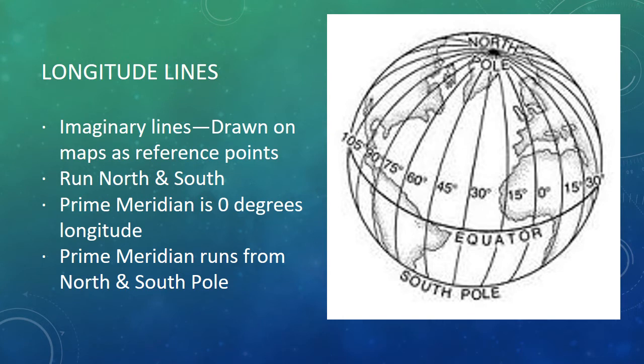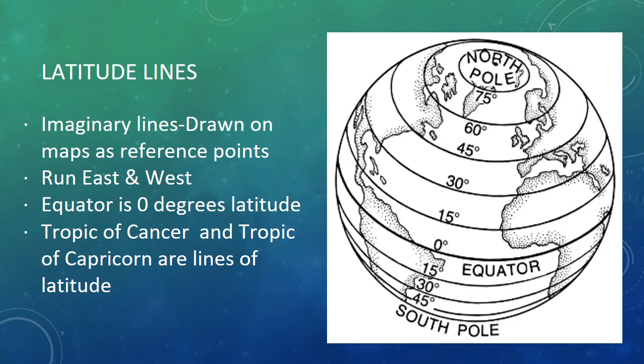Longitude lines are imaginary lines drawn on maps as reference points that run north and south. The prime meridian is at zero degrees longitude and runs from north to south pole, right through Greenwich, England. Latitude lines are imaginary lines drawn on maps as reference points that run east and west. The equator is at zero degrees latitude. The Tropic of Cancer and the Tropic of Capricorn are also lines of latitude.